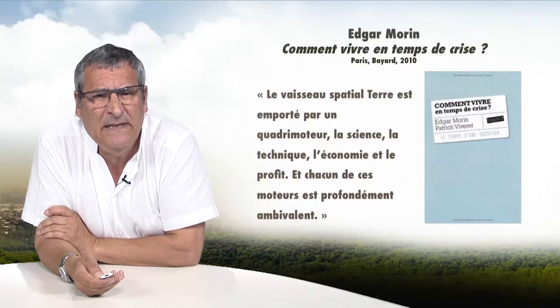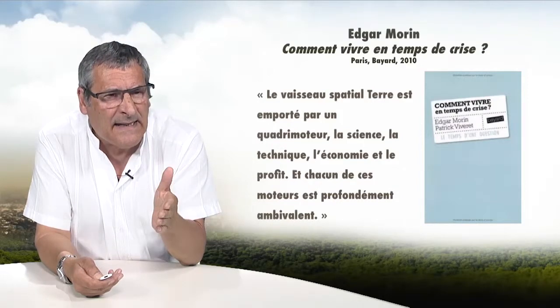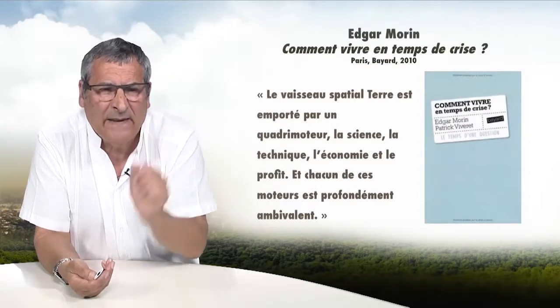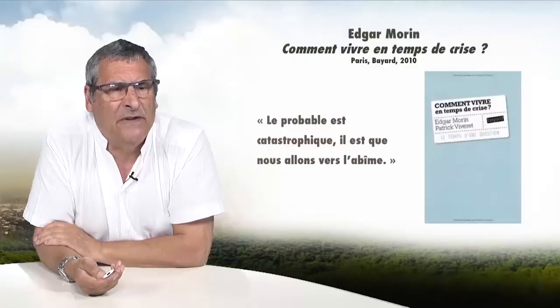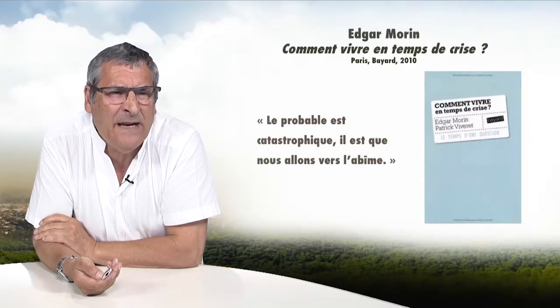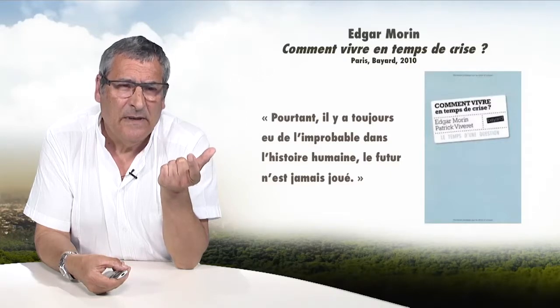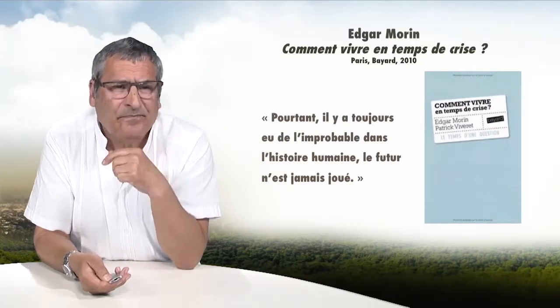I would like to talk about Edgar Morin, who wrote with Patrick Vivret: How to Live in Times of Crisis. He said, the Earth is a spaceship with four engines — the explosion engines: science, technique, the economy, and profit. Each of these can be highly beneficial, also very dangerous for humankind. Edgar Morin says: I am not a catastrophist. The probable is catastrophic — we are walking towards a deep chasm. But the future is never played in advance, and we all need to become aware and start acting right now.